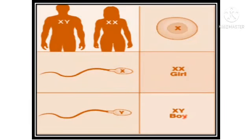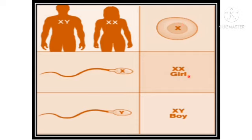Let us see what determines a female or male child. Males carry X and Y; females carry both X chromosomes. The female gives an ovum which carries the X chromosome. Sperms may carry either X or Y chromosomes. If the sperm containing X chromosome fuses with the ovum, which obviously contains X, then we get a female child, because X plus X.